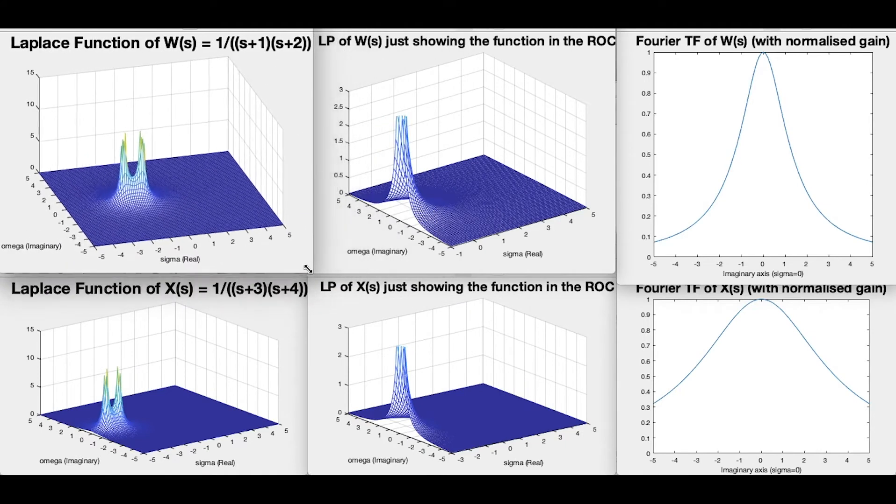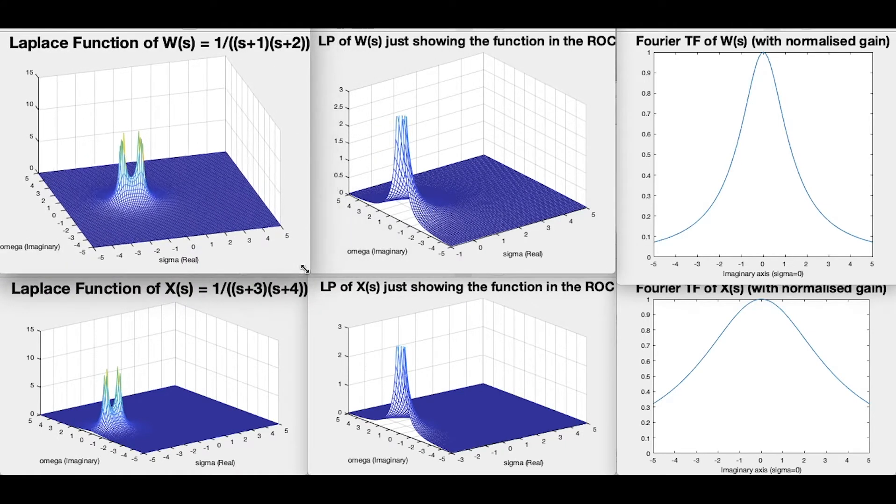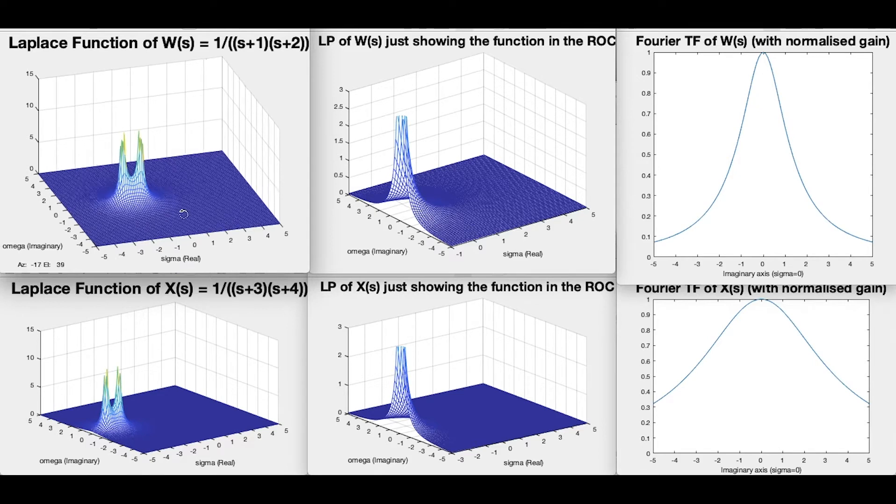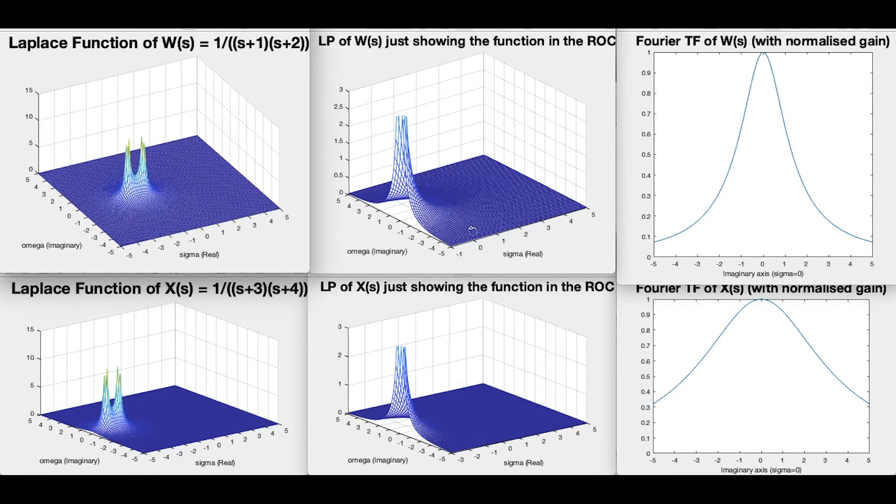Here I've got another plot in the top middle, which shows exactly the same plot, but only for the region of s, where the real value of sigma is bigger than minus one.